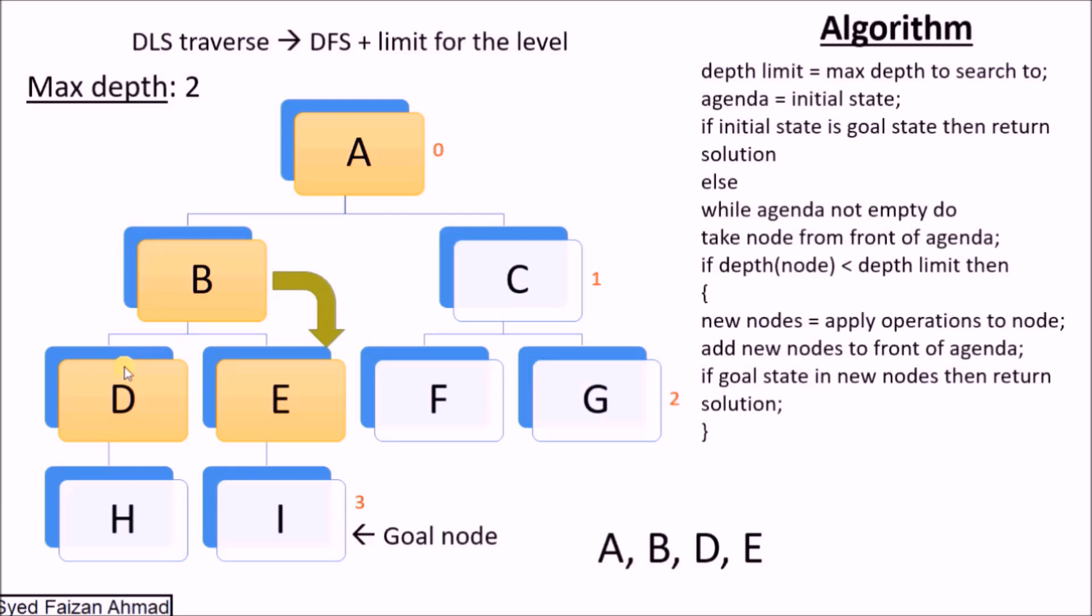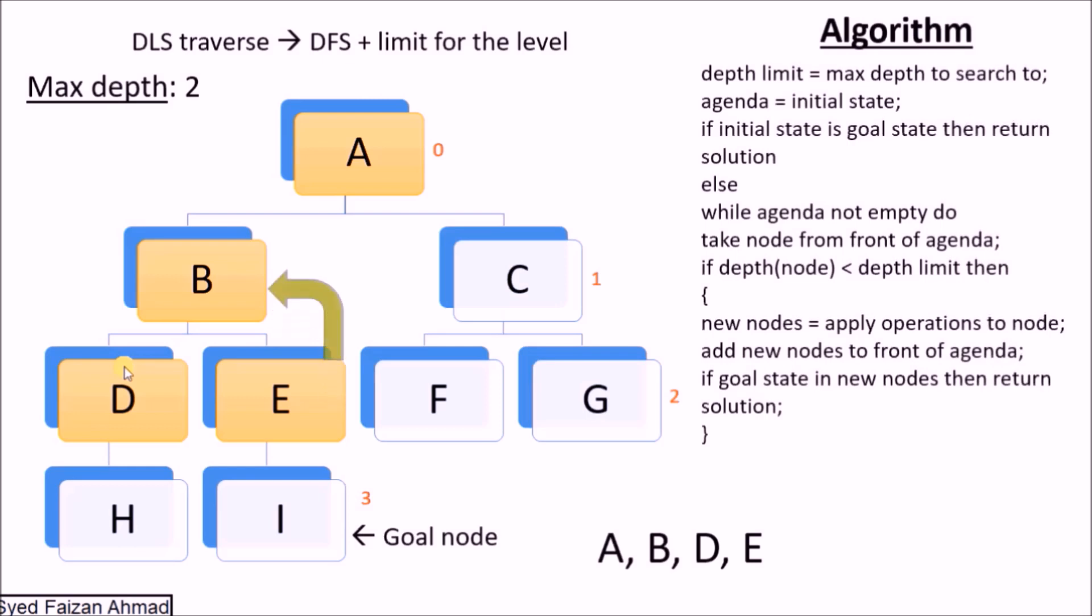From B we will come to E because we go right. Now after E, we cannot go to I because we have reached the maximum level. Now we backtrack to B again, and then backtrack to A.